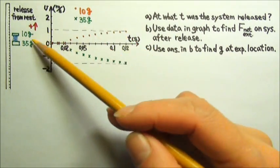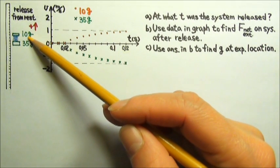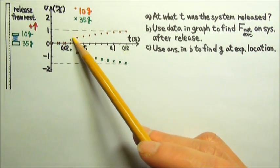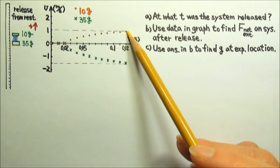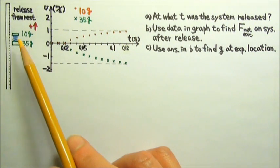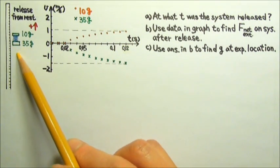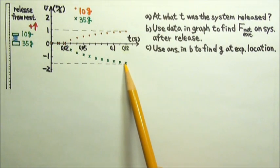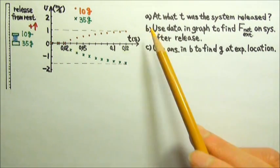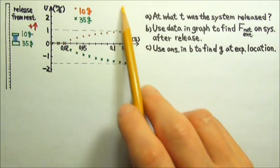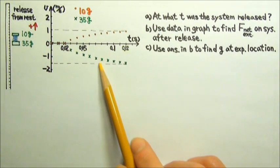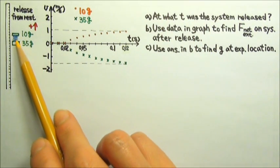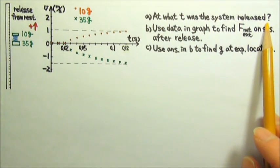The 10g block gets shot upward, so its velocity is positive at first. The 35g block is shot downward, so its velocity is negative. Part A: Based on the information in the graph, at what time was the 2-block spring system released?